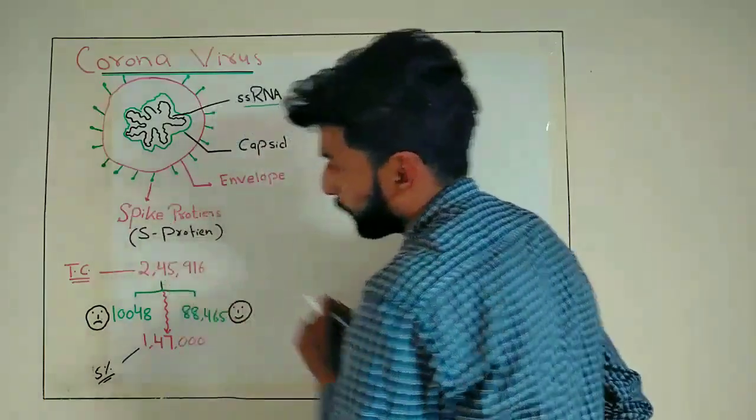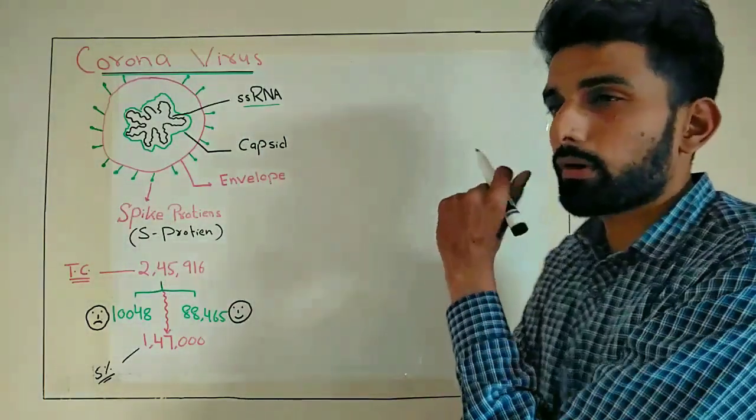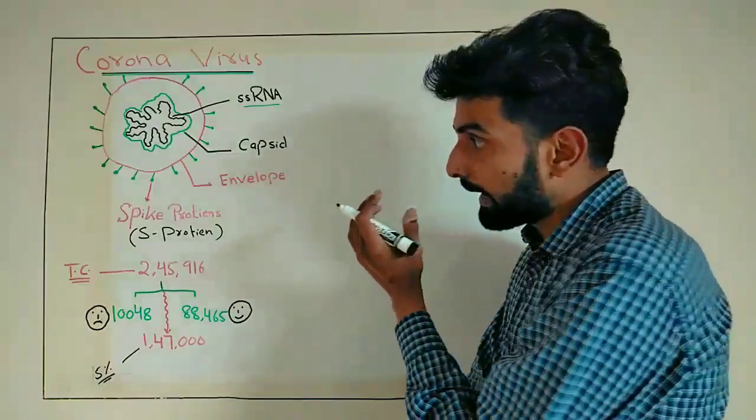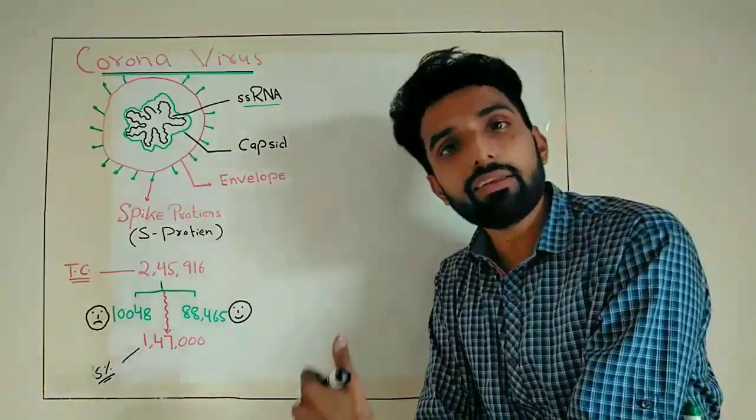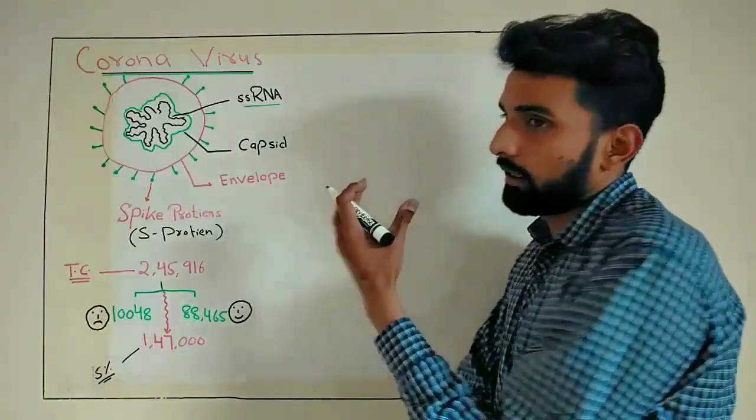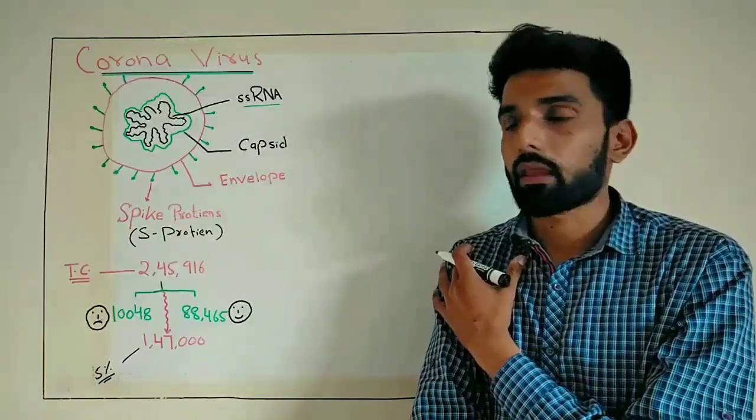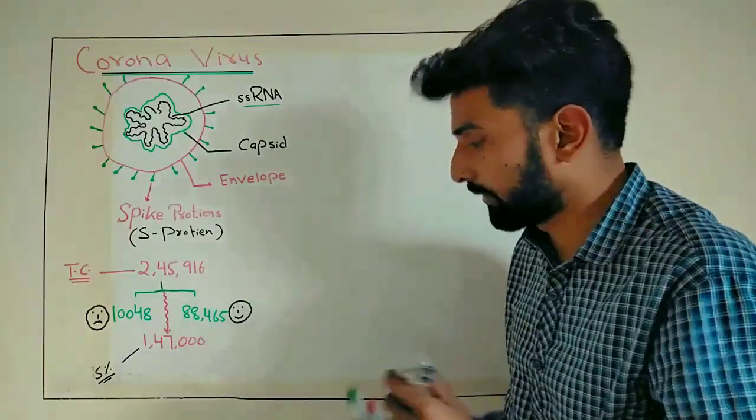You can see another protein called spike protein, or S protein. And this protein is very important for the entry, for the penetration of this coronavirus into our body. We will talk about it later.